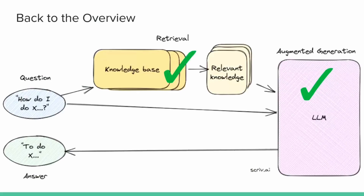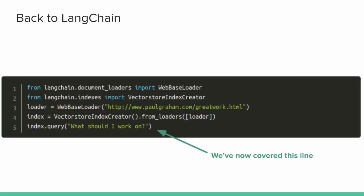Back to the overview — we have now covered retrieval and the augmented answer generation step. That one line of code is actually doing that entire embedding vector database lookup, sending it to the language model, and getting back the response. You can see why LangChain caught on — the fact that you can write five lines of code and be doing this directly in a Python interpreter is incredible. It's super fun and magic to play with.